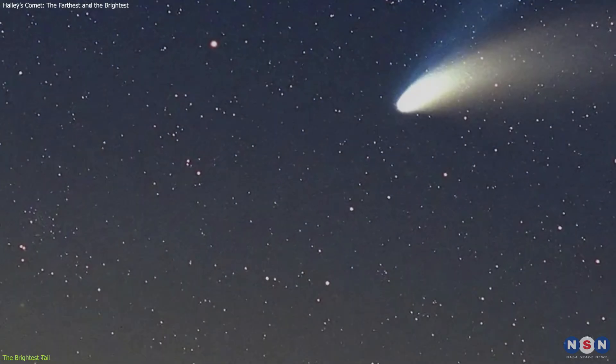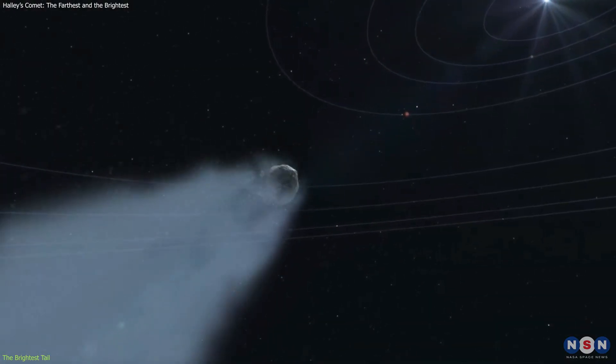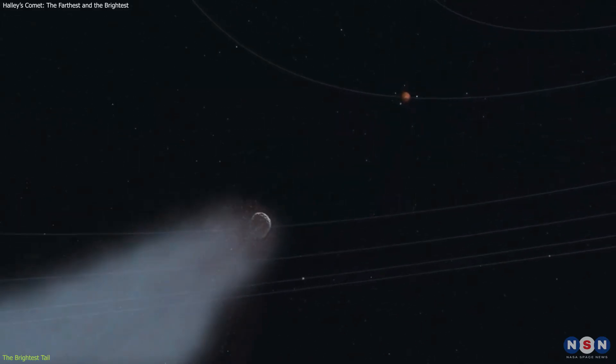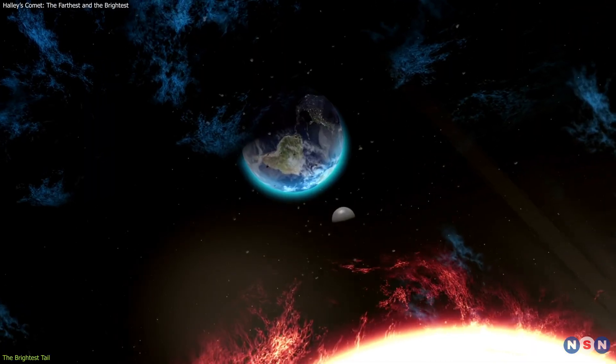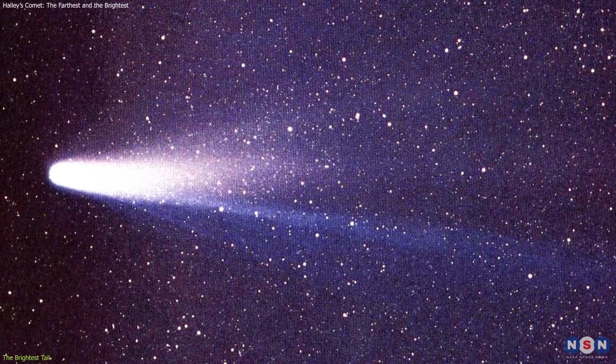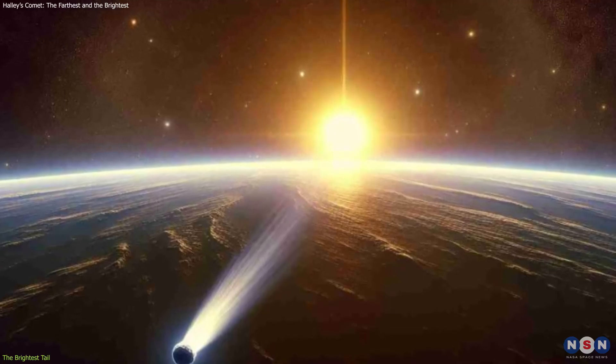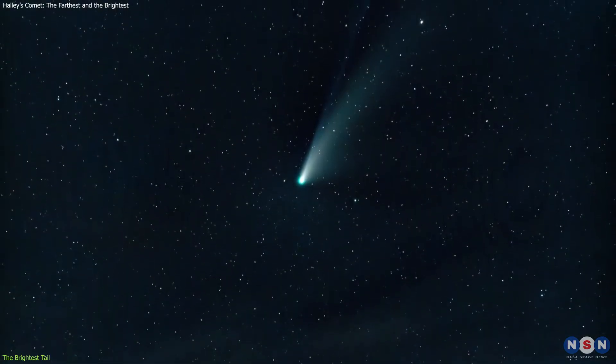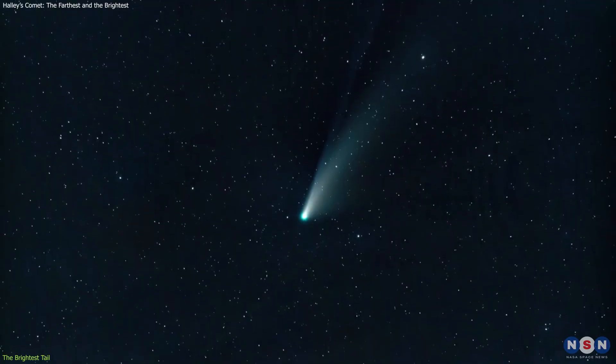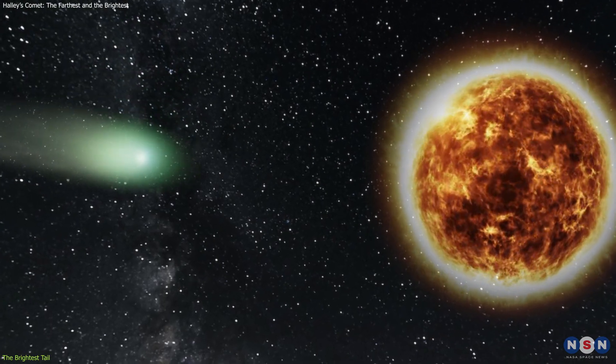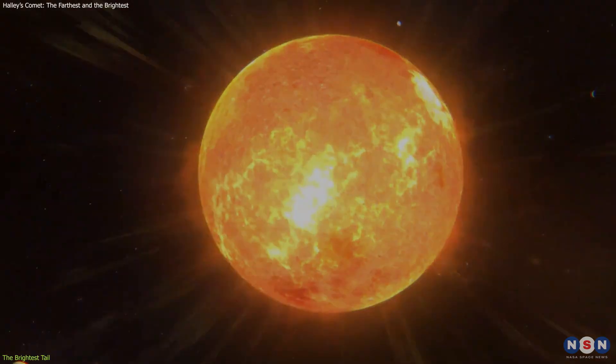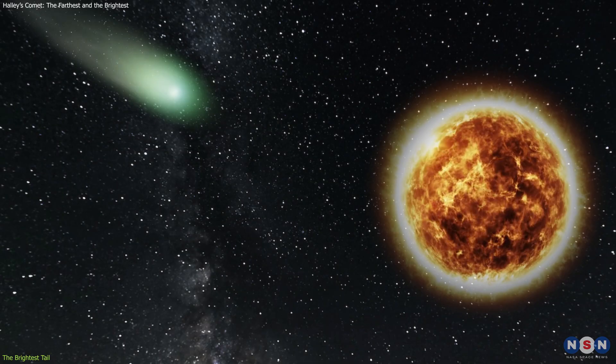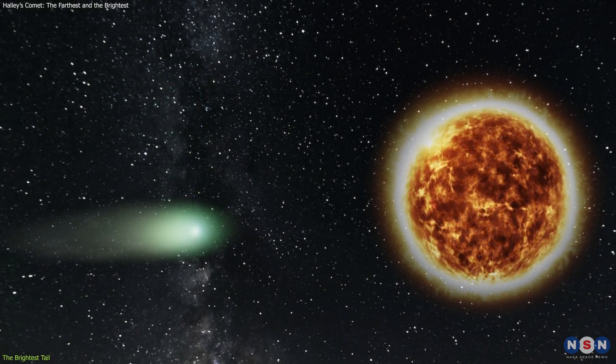But that's not all. The comet also has a tail, which is the stream of gas and dust that trails behind the head of the comet. The tail of Halley's Comet can be up to 100 million kilometers in length, which is more than half the distance between the Earth and the Sun. It is what makes the comet so bright and spectacular, as it reflects and scatters the sunlight. The tail is also what makes the comet so variable and unpredictable, as it changes shape and direction depending on the solar wind, which is the stream of charged particles that flows from the Sun. It can sometimes split into two or more parts, or even disappear and reappear, depending on the conditions in space.